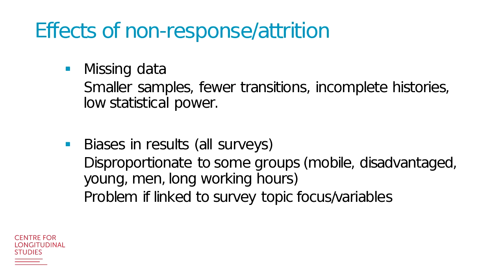In terms of effects of non-response, unit non-response leads to smaller samples, fewer transitions, incomplete histories in longitudinal studies, and lower statistical power. It also leads to bias in sample composition — we have disproportionate representation of some groups. We tend to lose respondents who are mobile, who come from disadvantaged backgrounds or ethnic minorities, those who are younger, those who are men, and those who have long working hours. This would require adjustment, because after a while your sample would not be representative of the parent population, and your results would not be generalizable to that population.